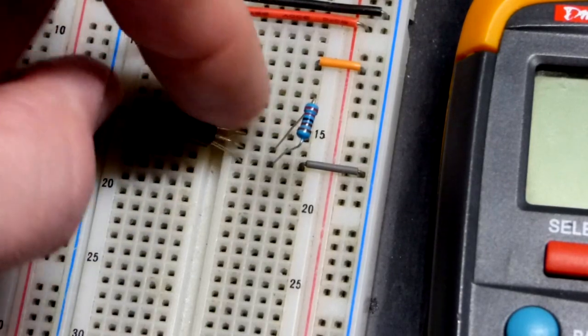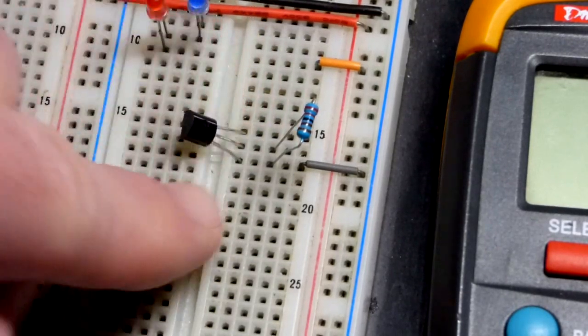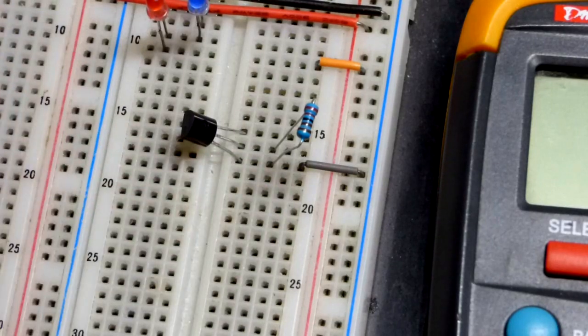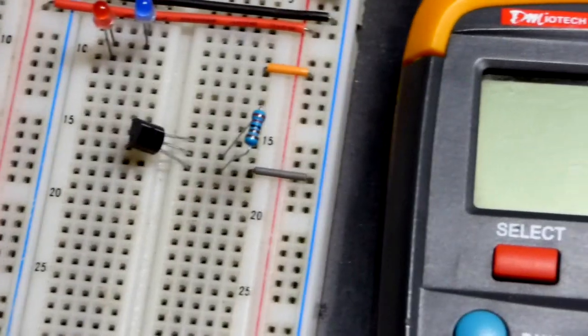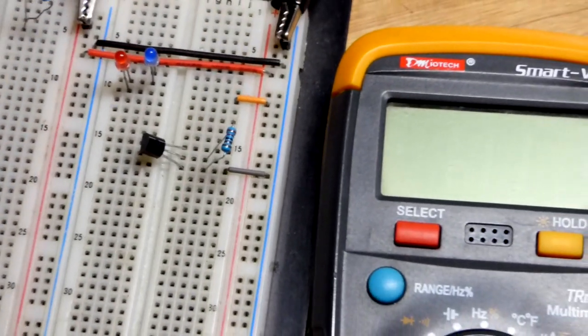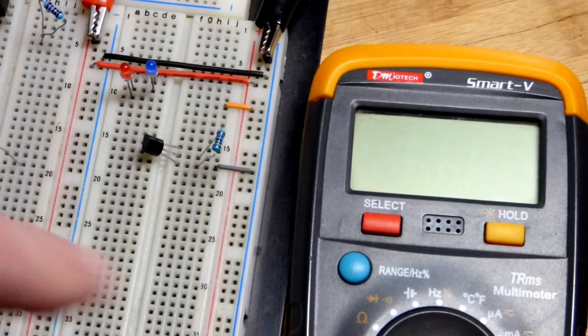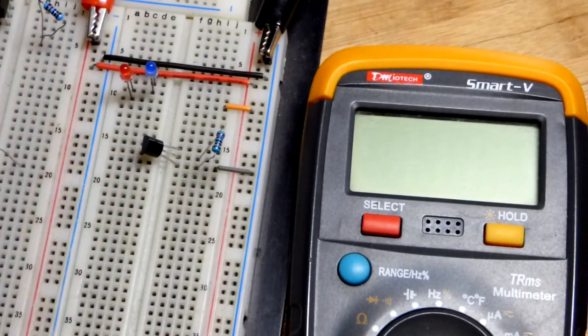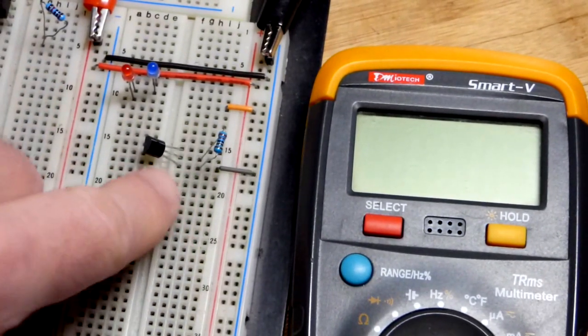So, flat side to the left. Top pin is drain, middle pin is source, and bottom pin is gate. Ultimately, the gate sets how well the source and the drain conduct based on the voltage differences between the source and the gate.